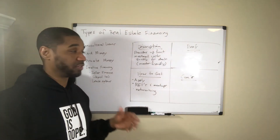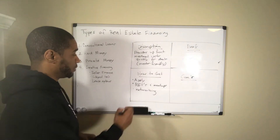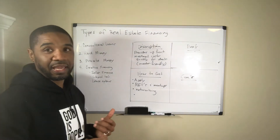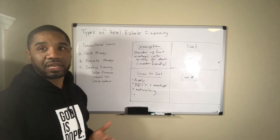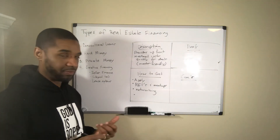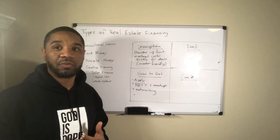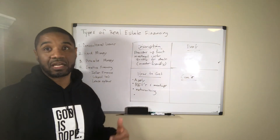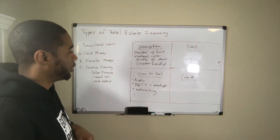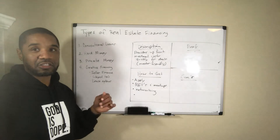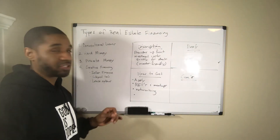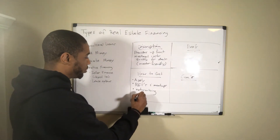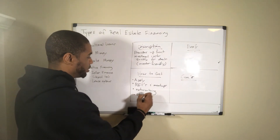With a hard money lender, most of your strength is on the deal itself. Whereas with a conventional loan the lender is looking primarily at you, with a hard money lender they also want to understand the DSCR — the debt service coverage ratio — which is your ability to pay the bills based on the income on the property. But primarily the hard money lender is looking at the strength of your deal more so than your creditworthiness. You've got to have a strong deal.